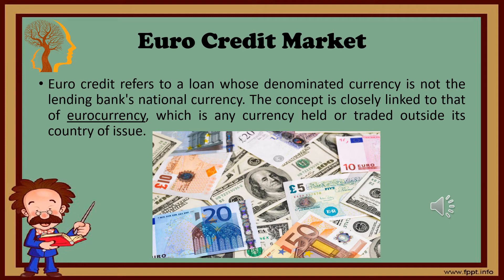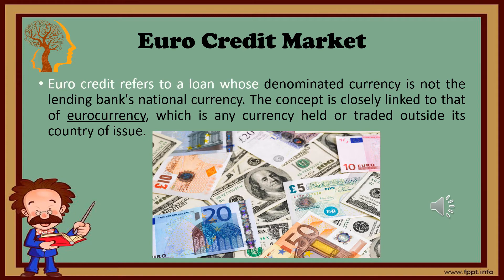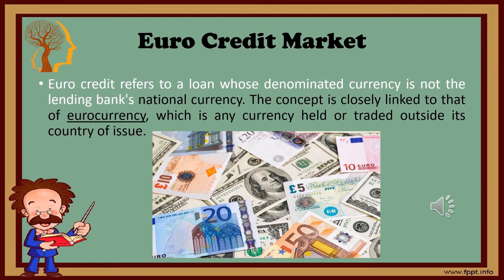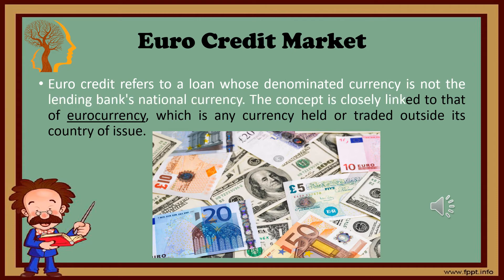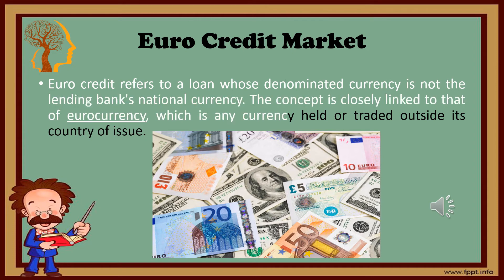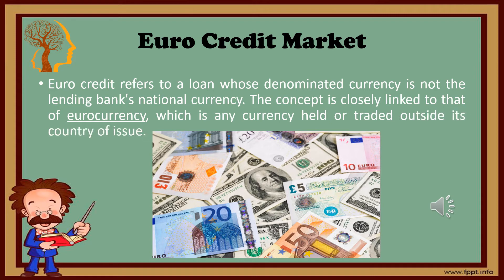Now the topic is the euro credit market. Euro credit refers to a loan whose denominated currency is not the lending bank's national currency. The concept is closely linked to the euro currency, which is any currency held or traded outside its country of issue. For example, a euro dollar is a dollar deposited, held, or traded outside the U.S. Conversely, a euro credit loan made by a U.S. bank would be one that is not denominated in U.S. dollars.